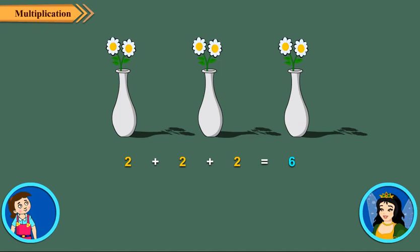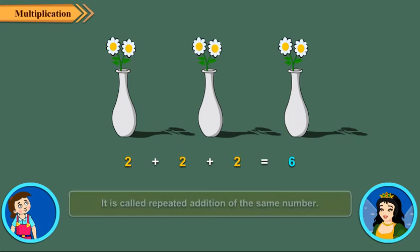Now observe these vases. Here each vase has equal number of flowers. So again to find the total number of flowers, we add. Here the number 2 is added repeatedly. It is called repeated addition of the same number. When a number is added over and over again, then it is called repeated addition of the same number.